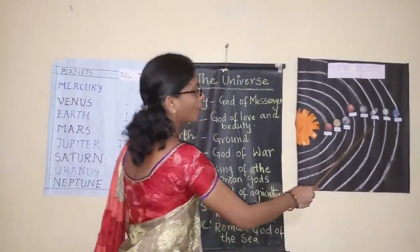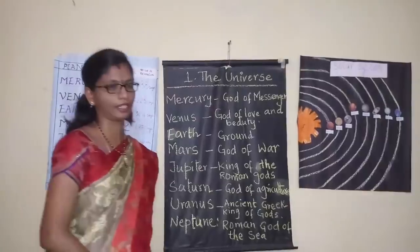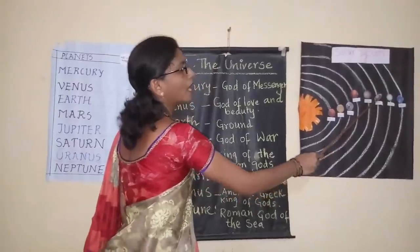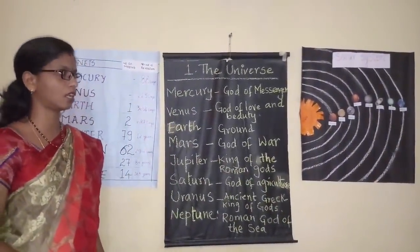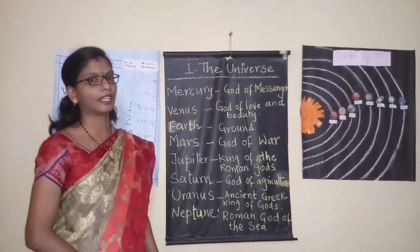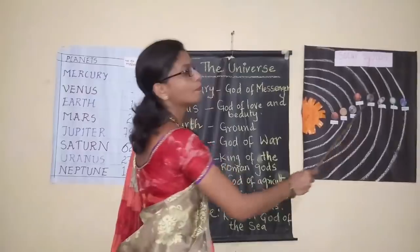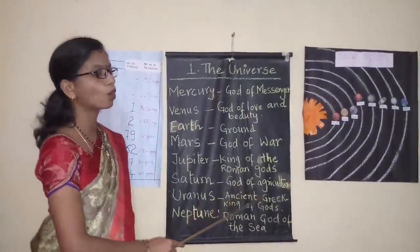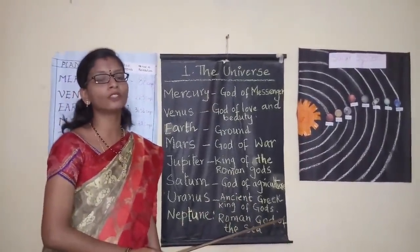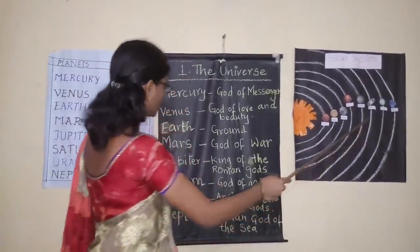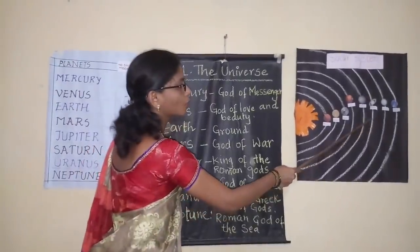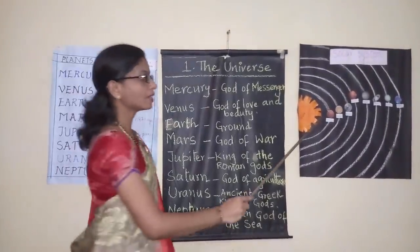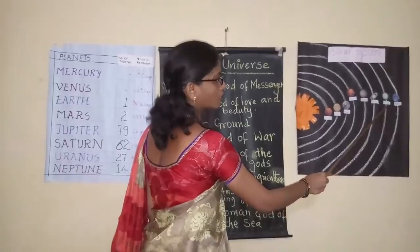The sixth planet from the sun is Saturn. This planet has rings around it, formed by ice and dust. It is also known as the ringed planet and is the second largest planet in the solar system. Saturn is named after the Roman god of agriculture. It takes 29.46 years to complete one revolution around the sun.